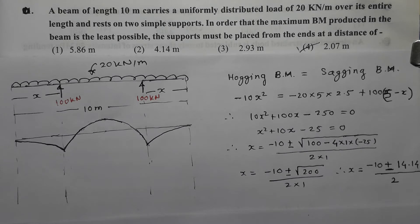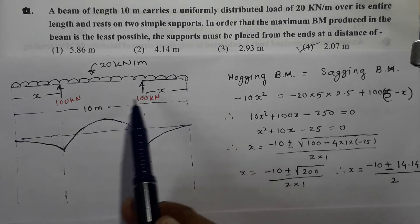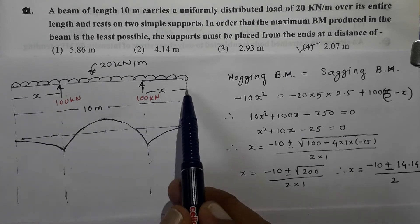Next question. A beam of length 10 m carries a uniformly distributed load of 20 kN per meter over its entire length and rests on two simple supports. In order that the maximum bending moment produced in the beam is the least possible, the supports must be placed from the edge at a distance of. Let us draw the figure first. It is going to be a double overhang beam, and let the length of each overhang be x.